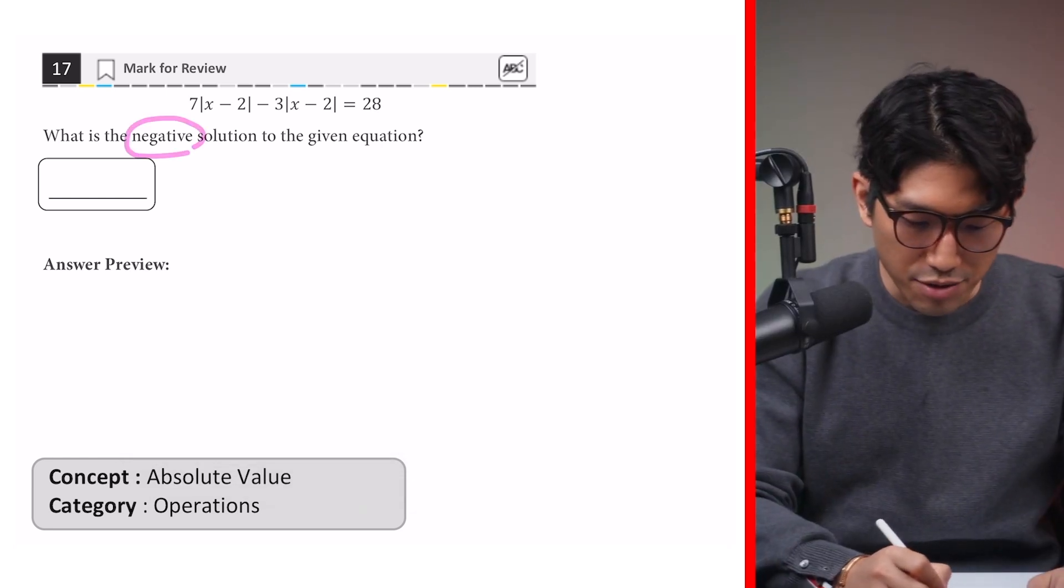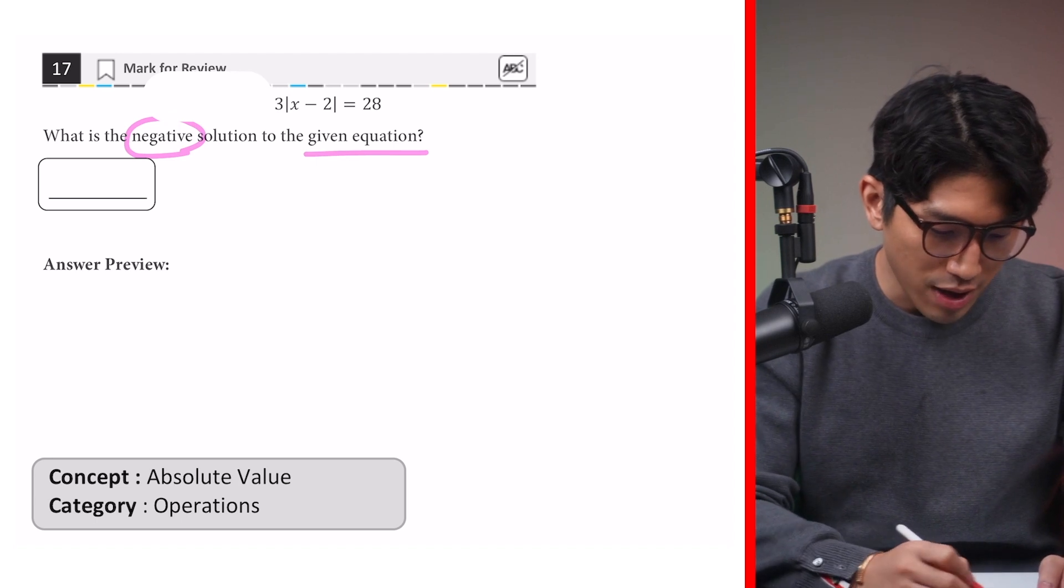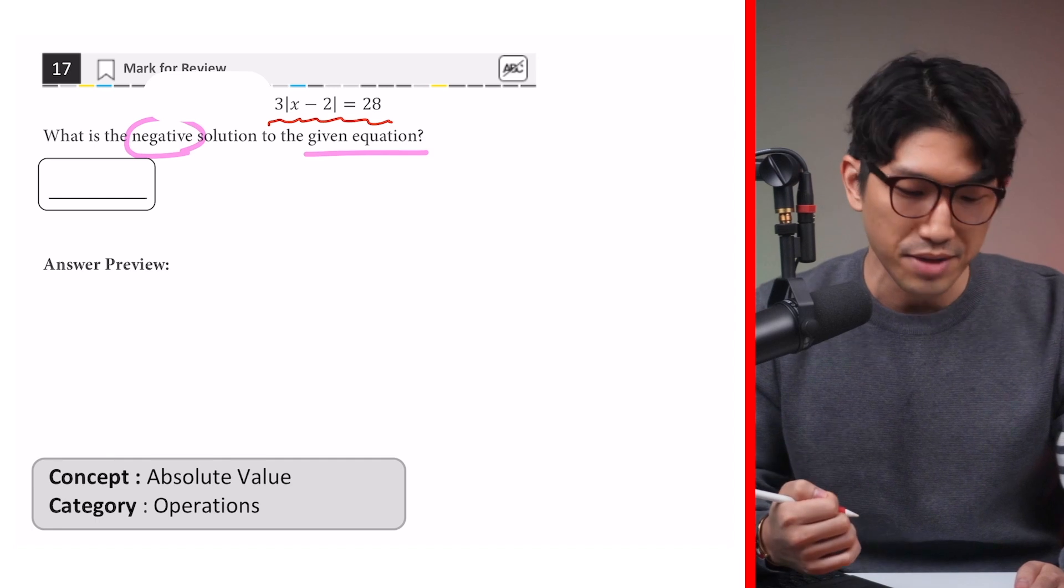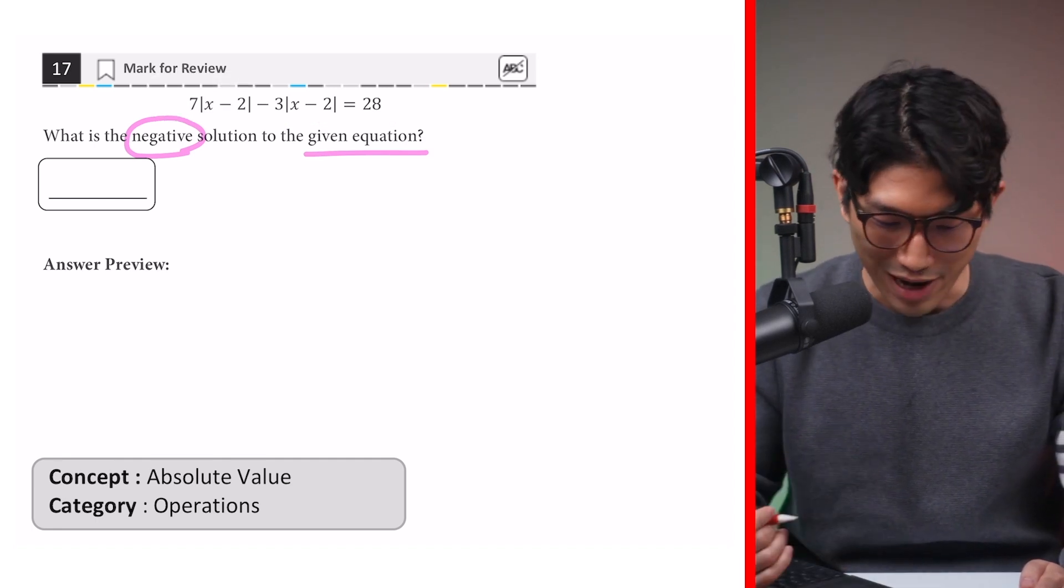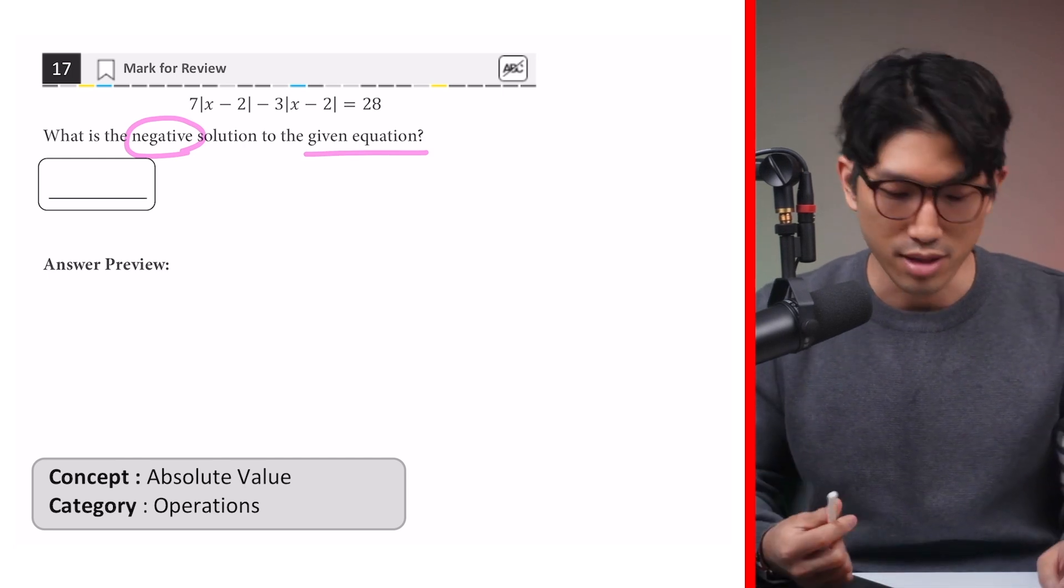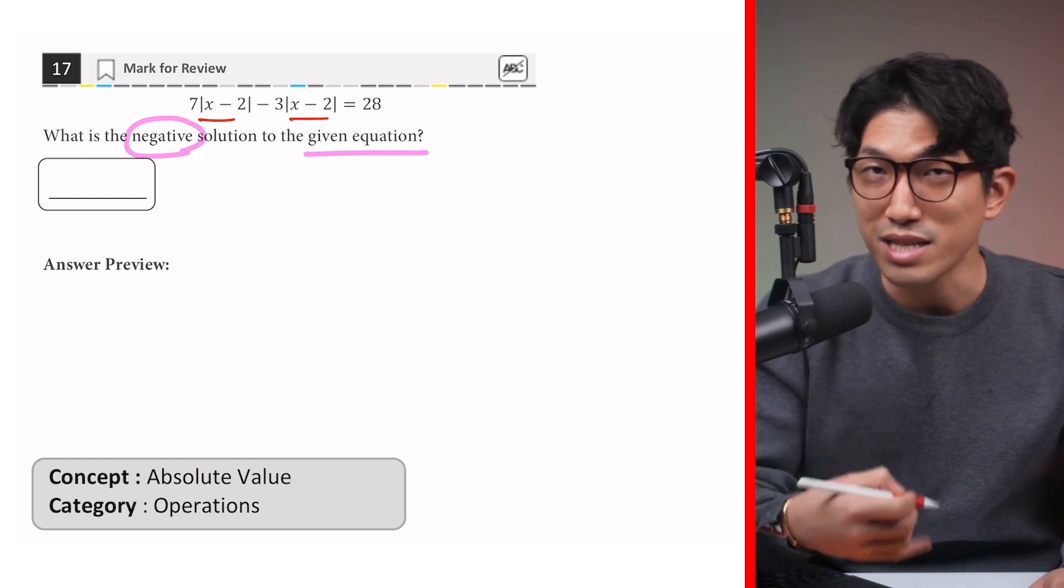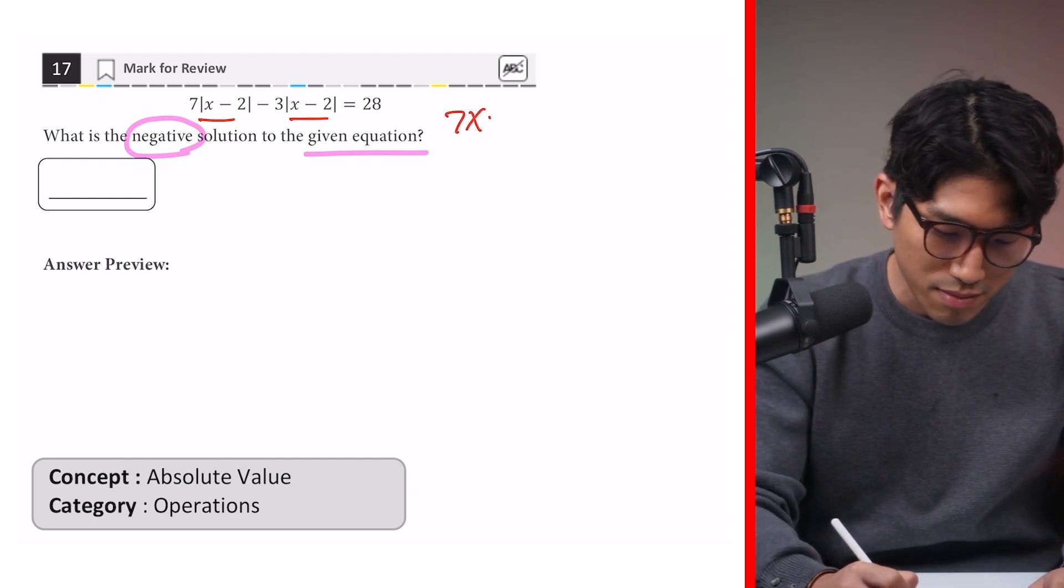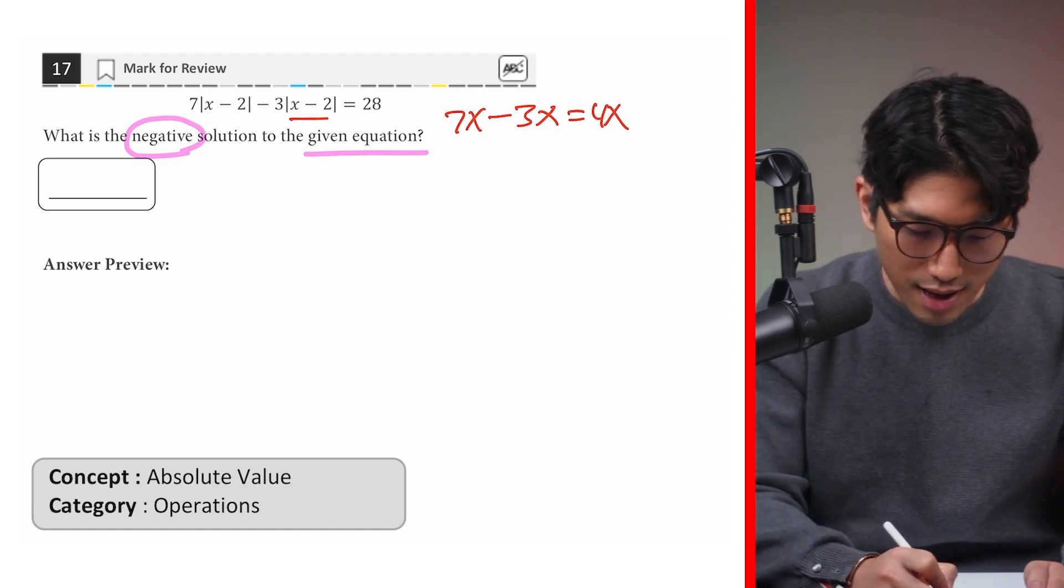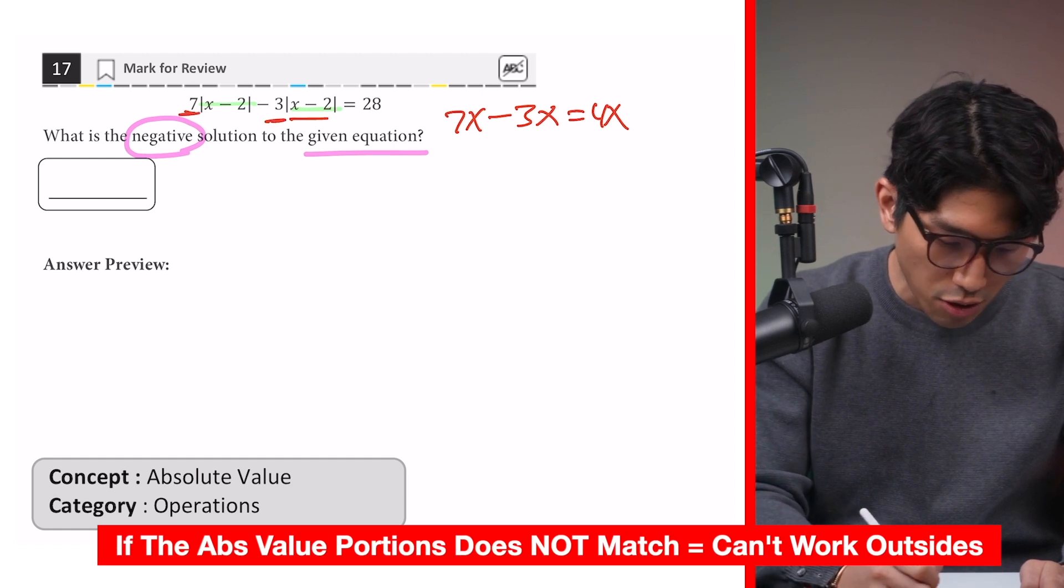So the question says, what's the negative solution to the given equation? So for the paper SAT, we weren't used to seeing that much right there and we just have to find the value of x that way. But for the digital SAT, they're giving you multiple absolute values. You need to know how to combine, separate, multiply, and divide. It's actually really simple. So you see how the absolute values are essentially the same? So think them as variables. You know how if it's like 7x minus 3x, you just get 4x like so. So pretend that the absolute value portion is going to be a variable and just work the outside like so.